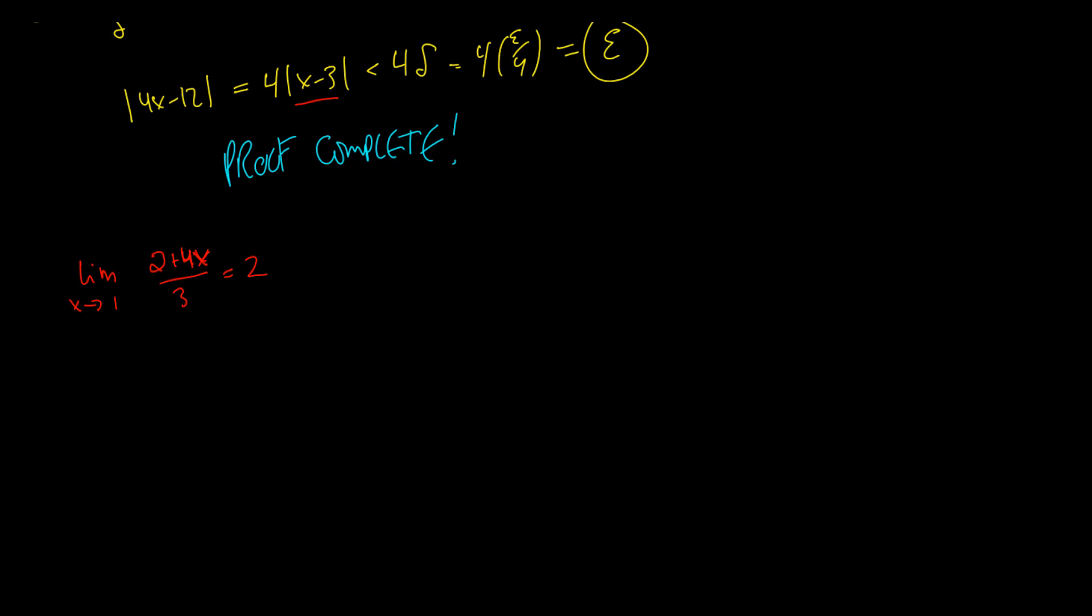All right, let's tackle this problem. So let's set it up. We know that x minus a is greater than 0, which is x minus 1, which is less than our number delta, and we know that our function minus our limit is less than the number epsilon.